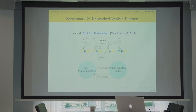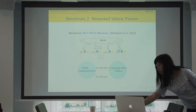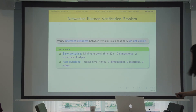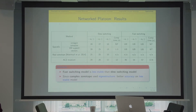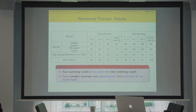Another example is the networked vehicle platoon. When communication is dropped, there is some time to re-establish it (the dwell time), and we want to verify whether the system is stable and collision-free. We also show that using real zonotopes (usual zonotopes) gives only positive results, but complex zonotopes are more efficient because the eigenstructures of the linear dynamics in these models are complex.